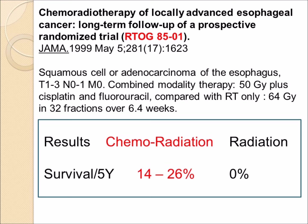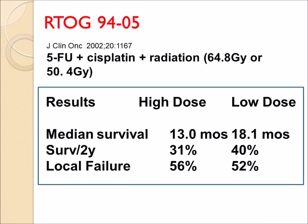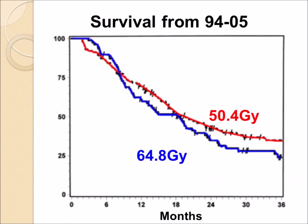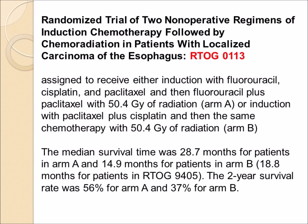The RTOG then conducted the 9405 trial, combining chemotherapy with even higher doses of radiation. No advantage was found to using a higher radiation dose, but chemoradiation still cured a certain percentage of patients. More recent RTOG trials such as the 0113 trial used more sophisticated chemotherapy regimens along with radiation, achieving even better overall survival — a median survival of 28.7 months in the best arm of the RTOG 0113 trial.